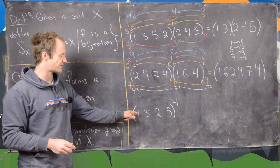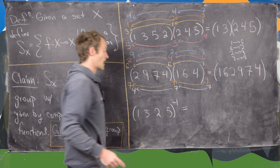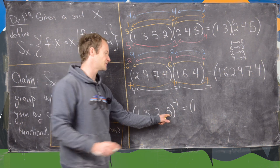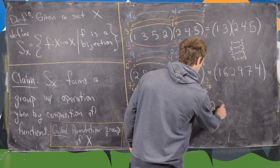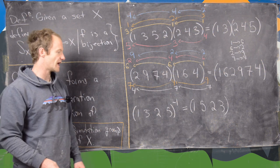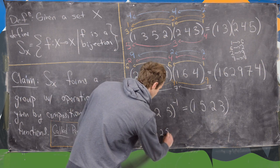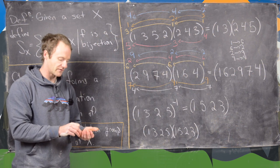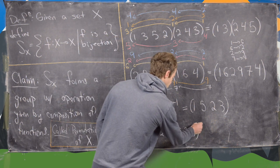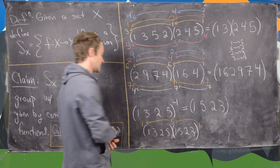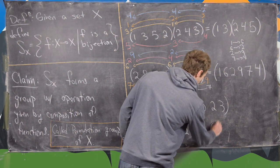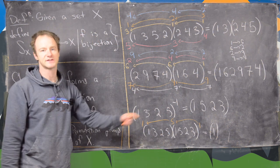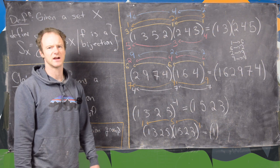The next thing is to find the inverse of a 4-cycle. That's easy — just read the cycle in reverse. For (1 5 2 3), reading in reverse gives (1 3 2 5). Let's verify: composing (1 3 2 5) with (1 5 2 3), we see 1 is sent to 5 in the first and back to 1 in the second — so 1 maps to itself. Similarly 2 is sent to 3 and then back to 2. These are indeed inverses of each other.